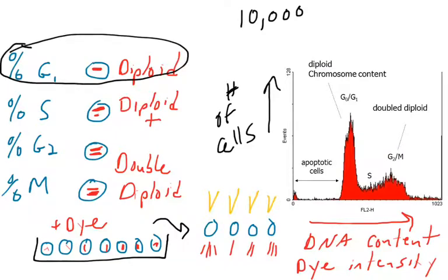The cells that are diploid in the G1 state, they will fluoresce with a certain intensity, and you would count them in this area here. This peak and the area under the peak represents the number or percentage of cells that are in G1.